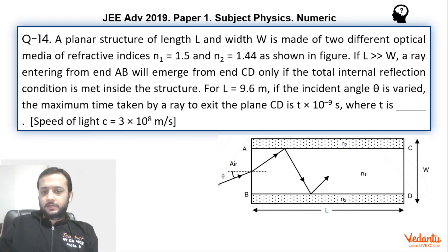So let's see what's happening over here. A ray enters this structure from air at an angle theta and this structure is made up of two different refractive indices n1 and n2. Value of n1 has been given 1.5 and n2 is 1.44.